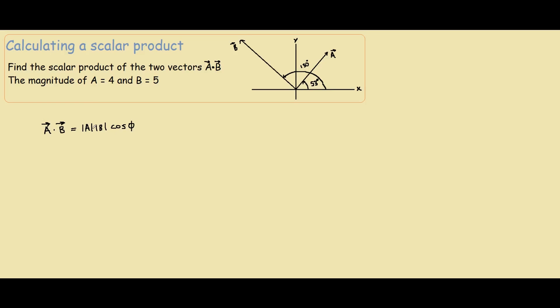Let me write down the scalar product. The magnitude of A times the magnitude of B times cos phi, where phi is the angle between the two vectors. Our first step is to find the angle between them.